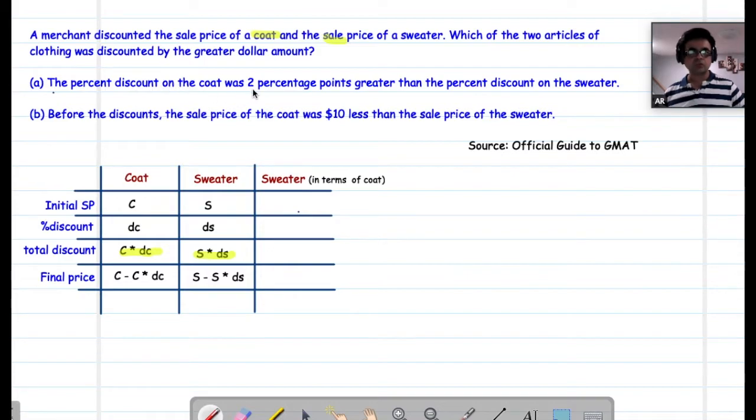The percent discount on the coat was two percentage points greater than the percent discount on the sweater. In other words, DS is nothing but DC minus two. I've been given a relation between DC and DS. Nothing is given about C and S unless I know what the initial selling price for these quotes is or what's the relation between them. I can't really solve this question. So A is definitely individually insufficient.